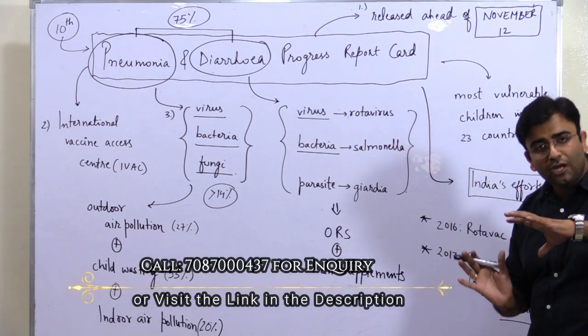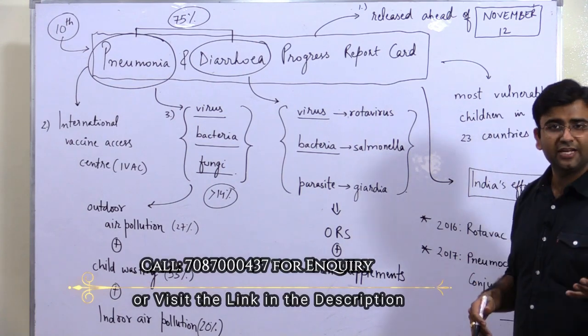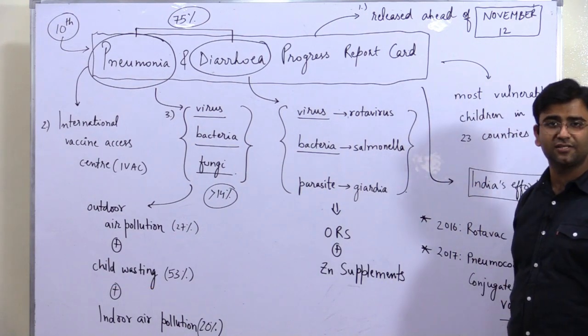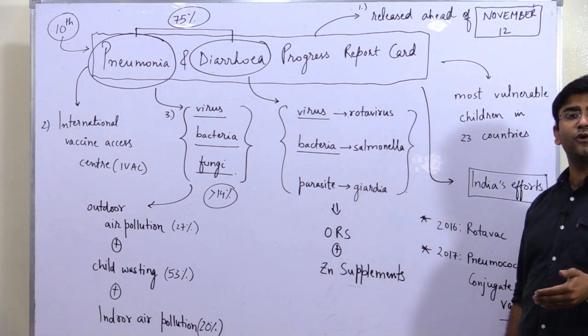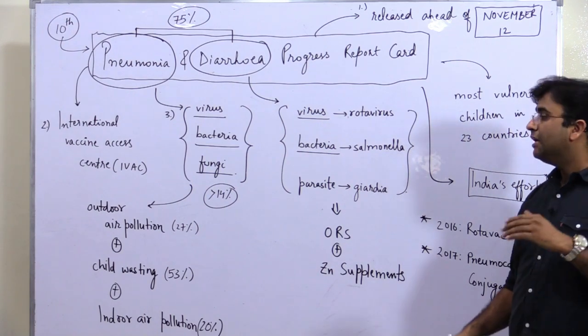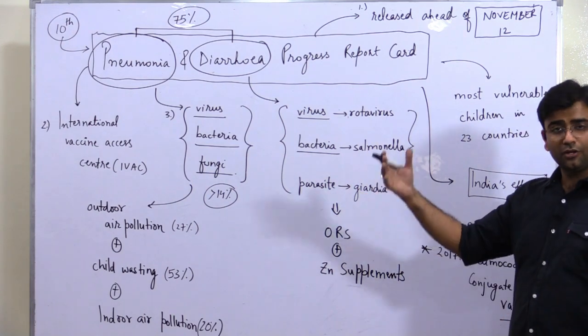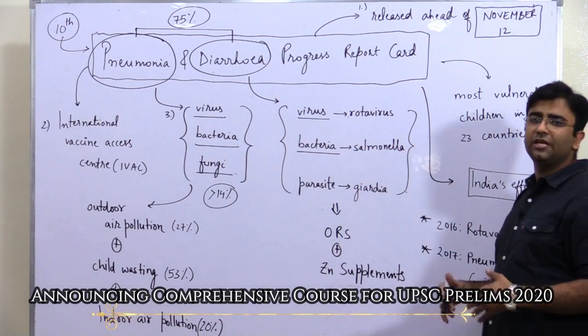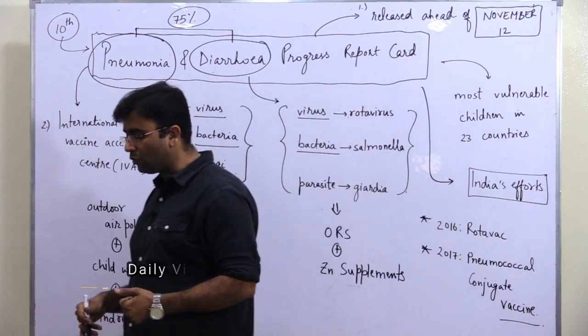The indicator shows the last 23 countries including India. Most vulnerable children in 23 countries were assessed, and it was found that in India, instances of pneumonia and diarrhea though they are high, now they are shrinking. So it's good news found in this report.